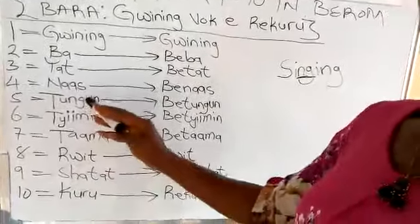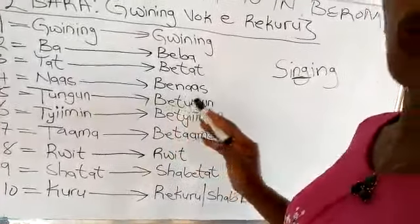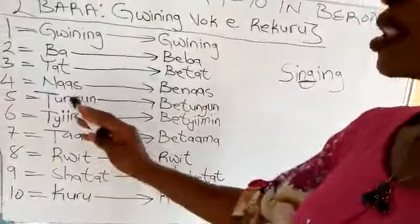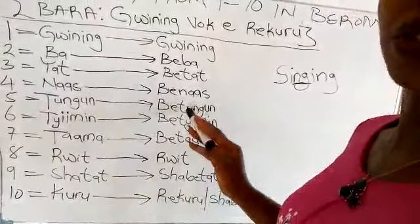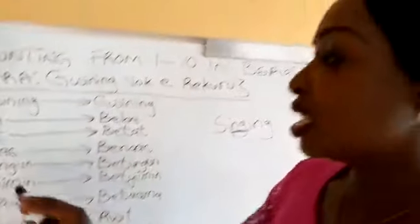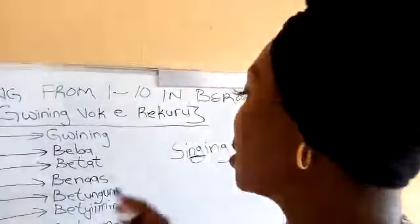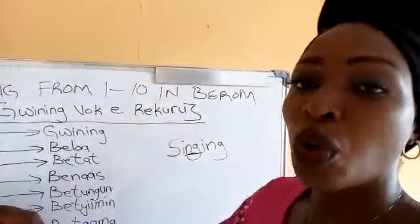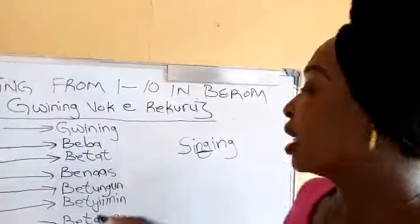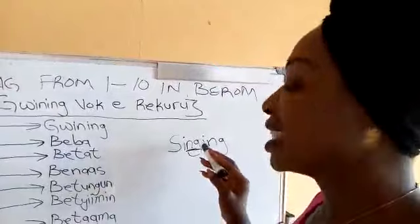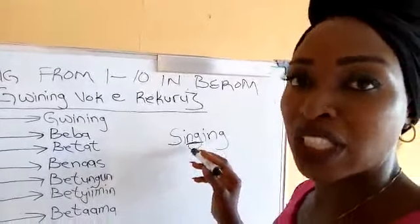5 is Tungun or Bitungun. Tungun or Bitungun. Do not say Tungun. The sound Tungun — the NG sound — applies to the one in singing in English language.